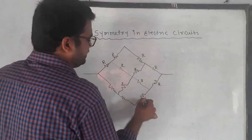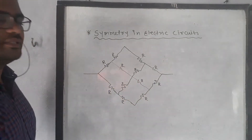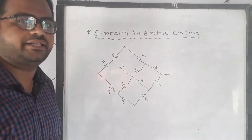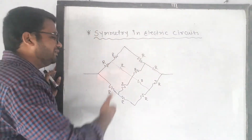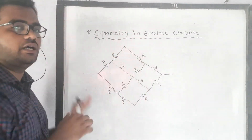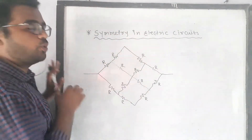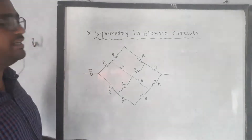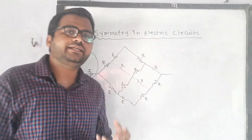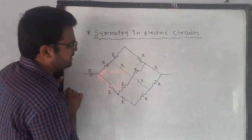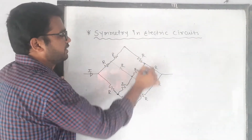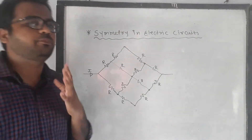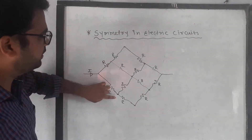The first rule of symmetry — and the least commonly used — states that all points which lie on lines perpendicular to the current direction are at the same potential, i.e., they are equipotential points. Current flows in a particular direction, and all points on the perpendicular to that current direction share the same potential.